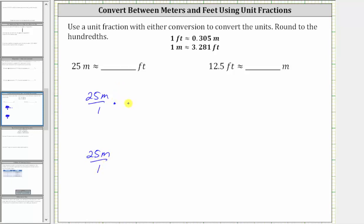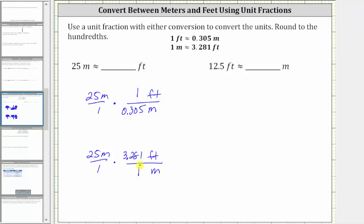Now we multiply by a unit fraction that will convert meters to feet. The important thing to recognize here is that when multiplying, we want the units of meters to simplify out. Since we have meters in the numerator, in the unit fraction meters must be in the denominator, which means we will have feet in the numerator. Notice in both cases we have meters divided by meters, and therefore the units of meters simplify out, leaving us with the units of feet.